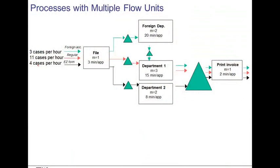Consider the situation of a tax accounting firm. The firm gets three types of cases: easy cases arriving at roughly four per hour, regular cases arriving at eleven per hour, and cases with foreign accounts arriving at three cases per hour. In the process flow diagram, while we still have the same symbols of boxes and triangles capturing activities and inventory, these three different types of accounts take different paths through the diagram — illustrated by color, with green arrows for foreign accounts, different from the red and black flows.